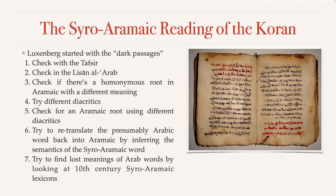This is where it gets really interesting. In step three, he assumes that the word in question is actually not an Arabic word but an Aramaic one. He checks for a homonymous root in Aramaic with a different meaning than the Arabic word. Luxenberg says that in a significant number of cases this resulted in an improved understanding of the verse — at which point he would go with that interpretation. But often enough it didn't, in which case he would go on to step four.